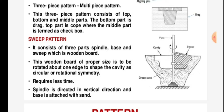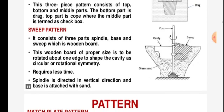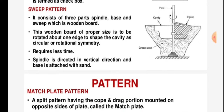Sweep pattern consists of three parts: spindle, base, and sweep — which is a wooden board. This wooden board of proper size is rotated about one edge to shape a cavity that has circular or rotational symmetry. The sweep pattern requires less time. The spindle is directed in the vertical direction and the base is attached with the sand.